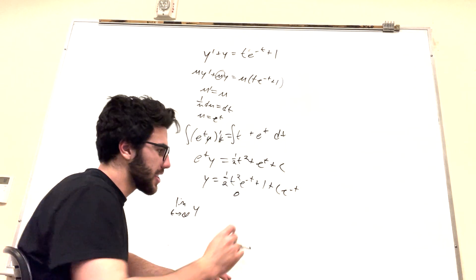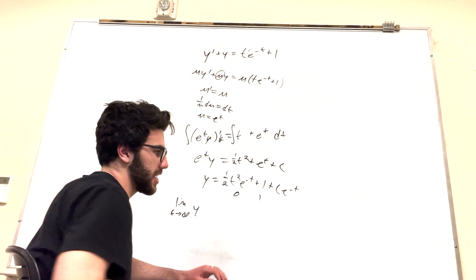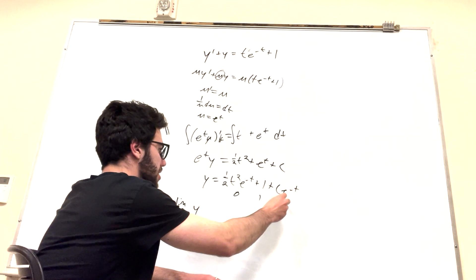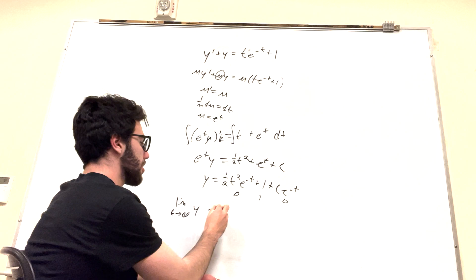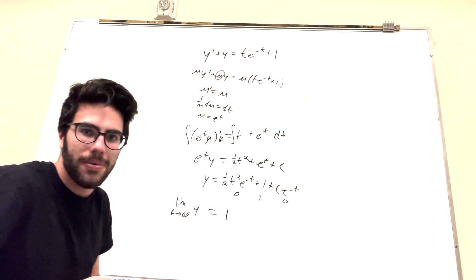1, obviously, is just gonna stay at 1. And then c e to the negative t also is gonna approach 0. So as t approaches infinity, y is gonna be equal to 1. And there you go. That's how you solve this problem.